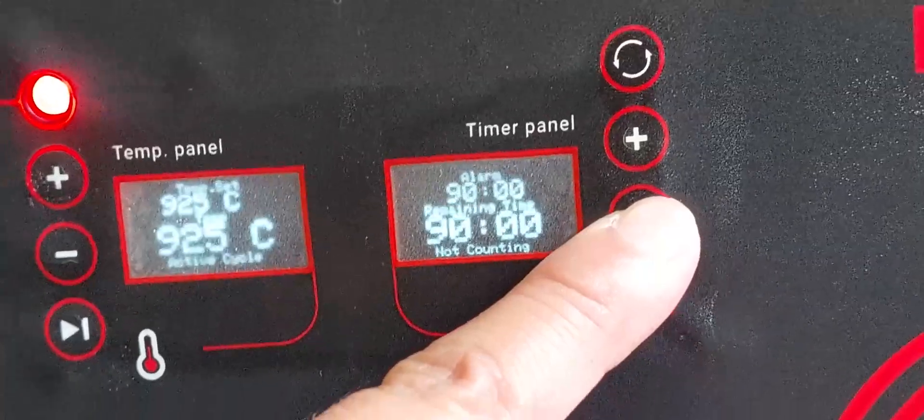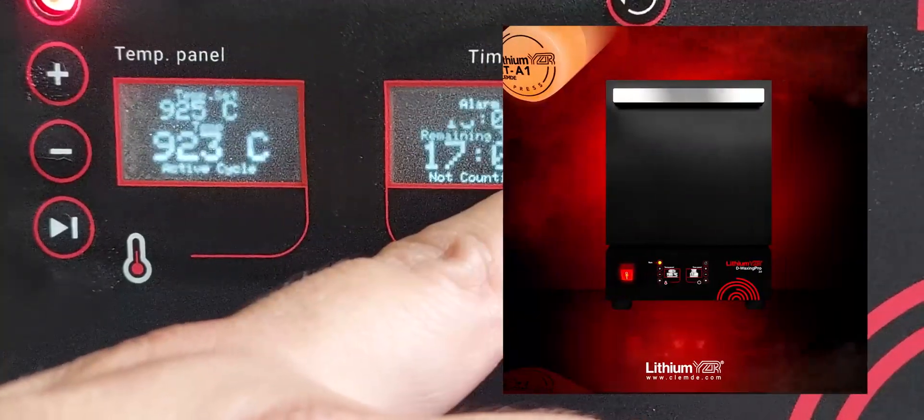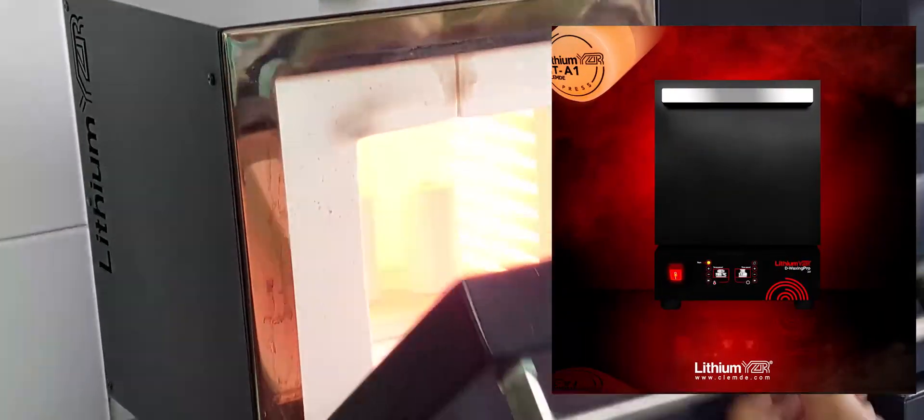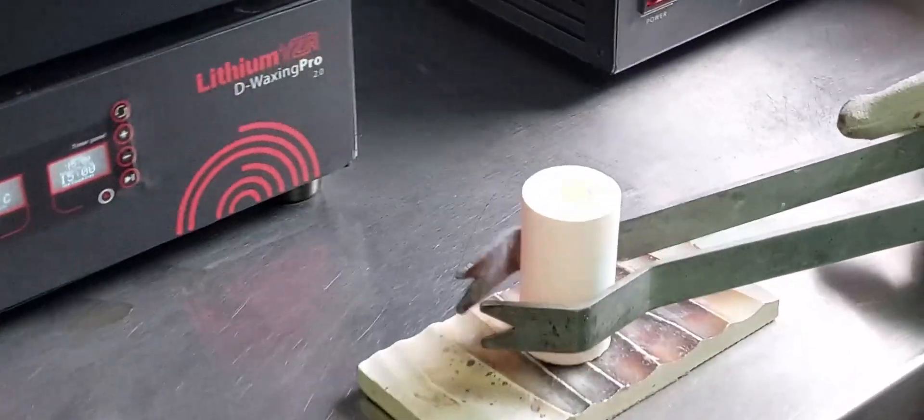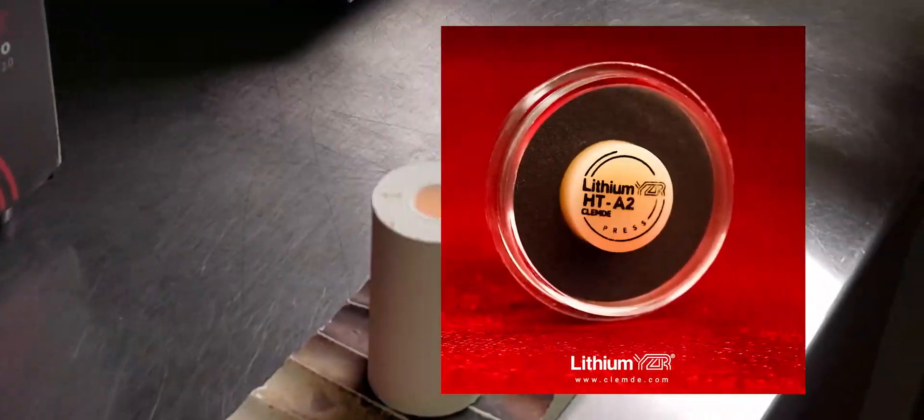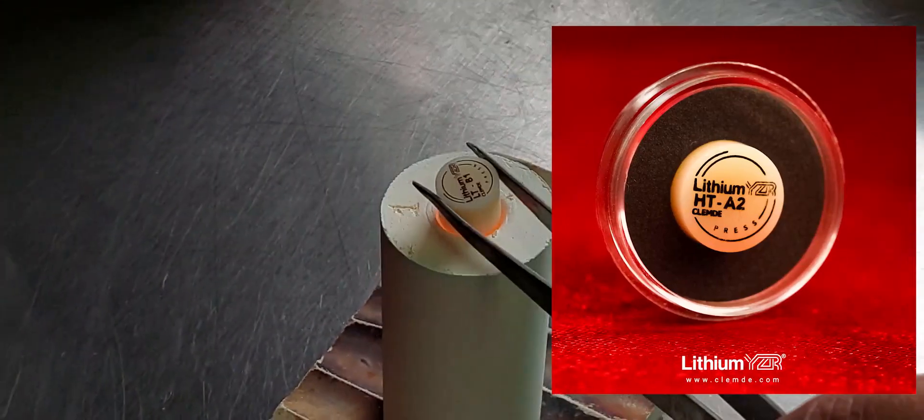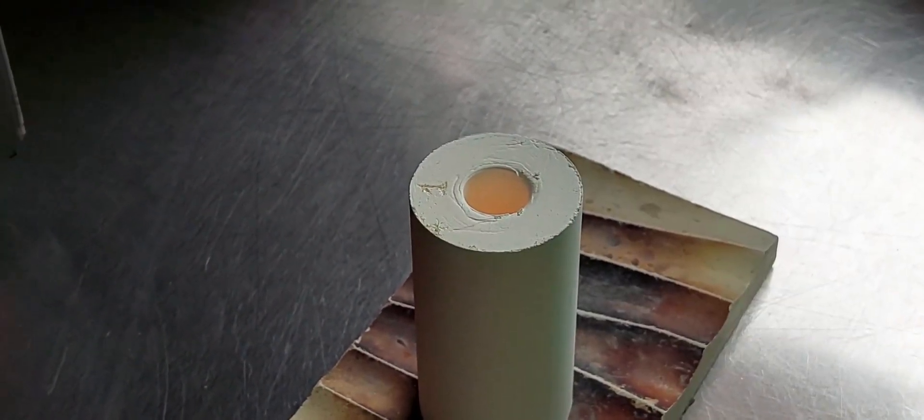After this 90 minute period, your models will be ready for removal. You can then drop in your lithium disilicate ingot and place the plunger on top.